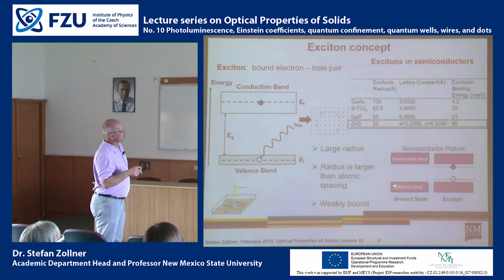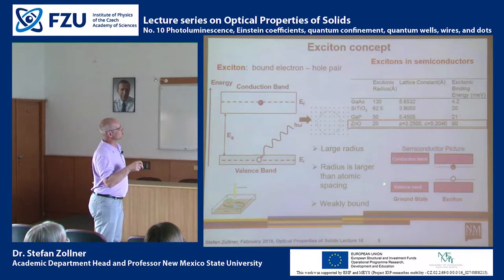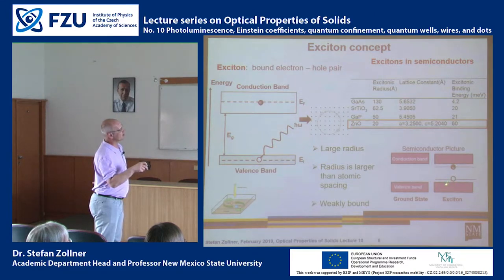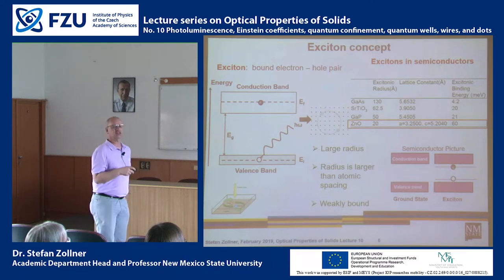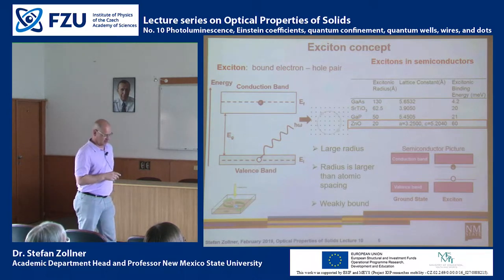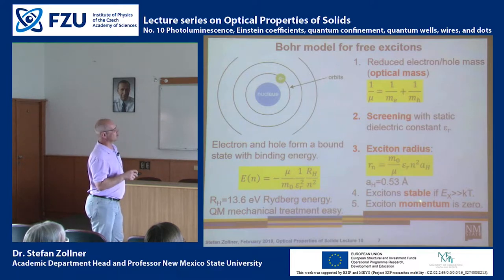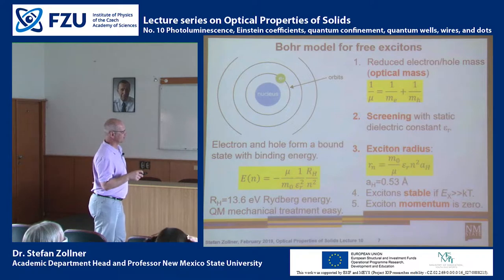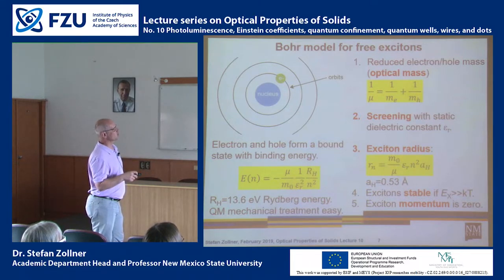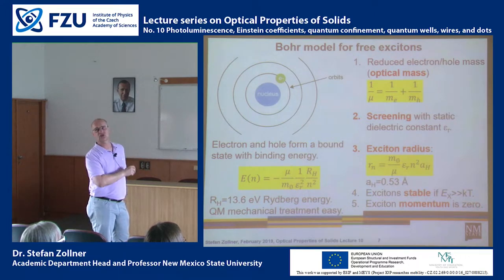Because of the binding energy, the simple valence band / conduction band picture is no longer fully relevant. Instead, we need a picture where the hole is slightly bound relative to the valence band and the electron has a small negative binding energy — the electron-hole pair sits in the band gap of the semiconductor. The exciton is stable only when the excitonic binding energy is much larger than kT. For gallium arsenide we have to go to liquid helium temperatures to see excitons. The total momentum of the exciton is zero because electron and hole have opposite momenta.